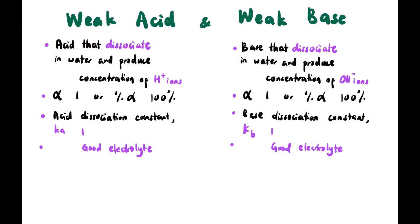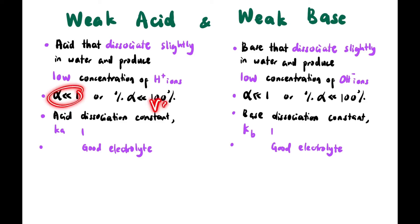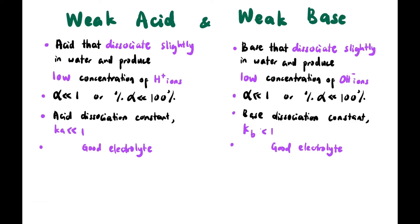Now let's look at weak acid and weak base. A weak acid is an acid that dissociates only slightly in water and produces a low concentration of H⁺ ions. A weak base dissociates only slightly in water and produces a low concentration of OH⁻ ions. Their degree of dissociation is much less than 1, percentage dissociation is much less than 100%, Ka and Kb are very small compared to 1, and they are not good electrolytes.